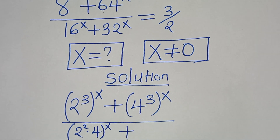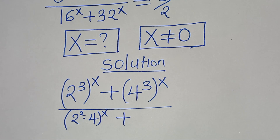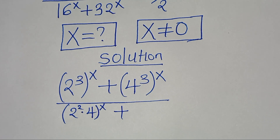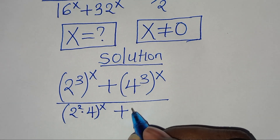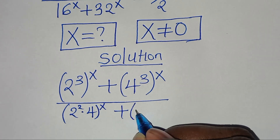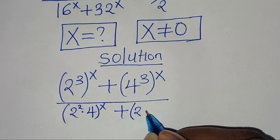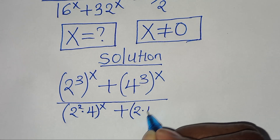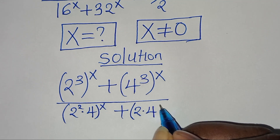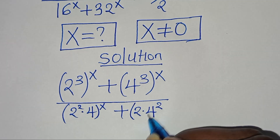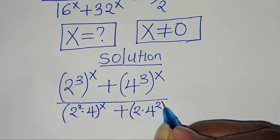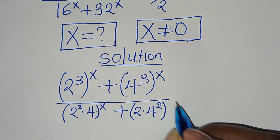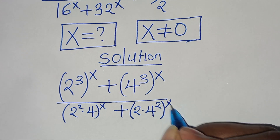Then plus 32 to the power of x, which we can express as 2 multiplied by 4 squared, which is 16, then raised to the power of x.